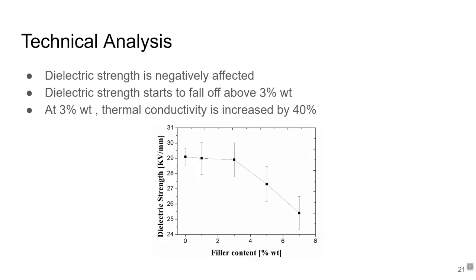However, thermal conductivity is not the only consideration. Dielectric strength is also important, since the composites have to provide electrical insulation for stator winding. Researchers have found that nanoparticles could lead to a decrease in dielectric strength. Dielectric strength starts to fall off when the nanoparticles are more than 3% by weight. At 3% by weight, thermal conductivity is increased by 40%. So this is a good balance between dielectric strength and thermal conductivity.